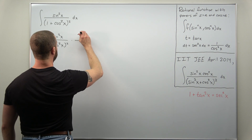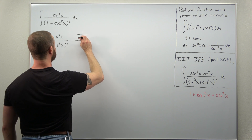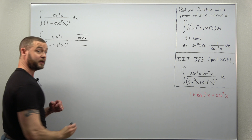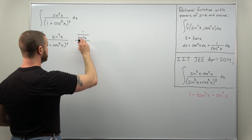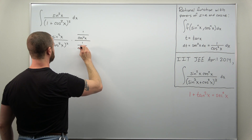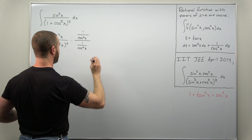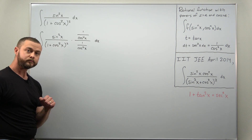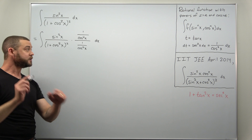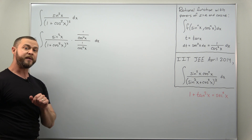Here we're going to multiply by one: one over cosine to the fourth power of x divided by the same thing. A quantity divided by itself is always one.